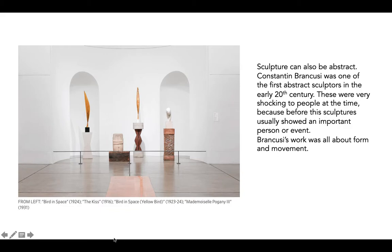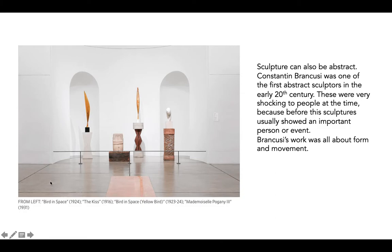Sculpture can also be abstract. Constantin Brancusi was one of the first abstract sculptors in the early 20th century. These were very shocking to people at the time because before this, sculptures usually showed an important person or event. Brancusi's work was all about form and movement. The sculpture on the left is called Bird in Space from 1924, and it isn't meant to show what a bird looks like, but what the movement of a bird looks like. How would you show what a bird looks like moving through space?